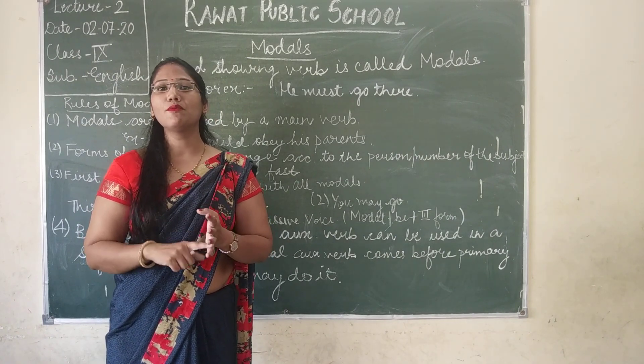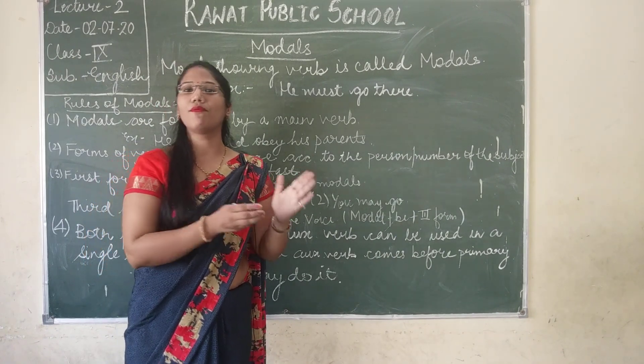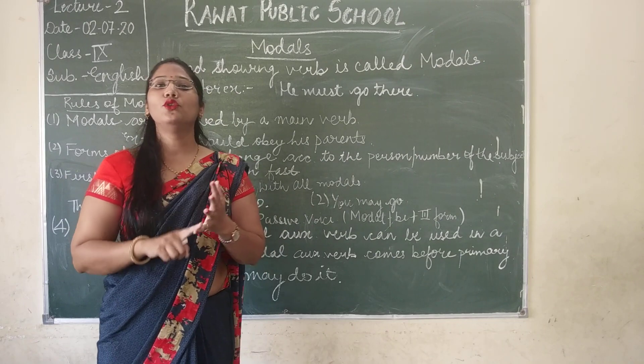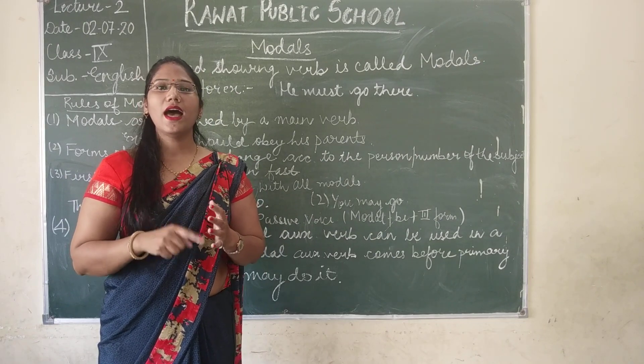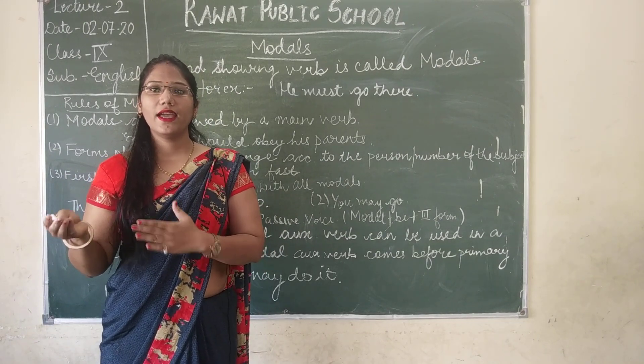Examples of primary auxiliary verbs are: do, did, done, has, have, had, etc.